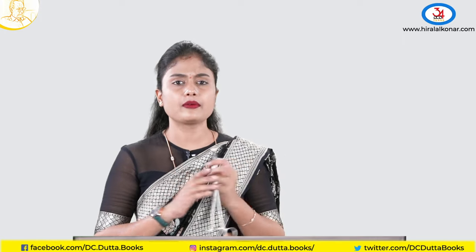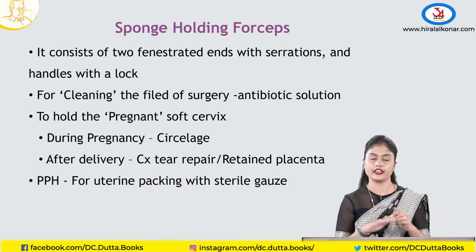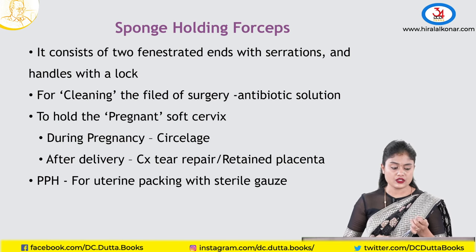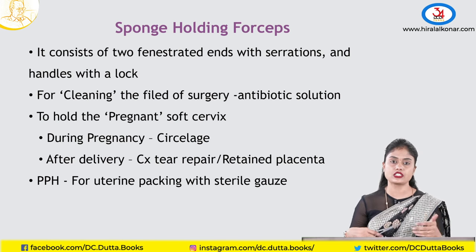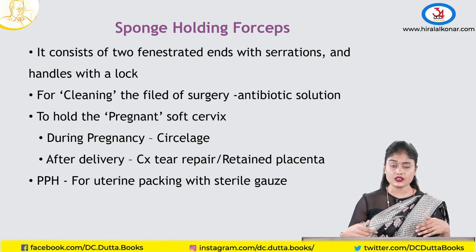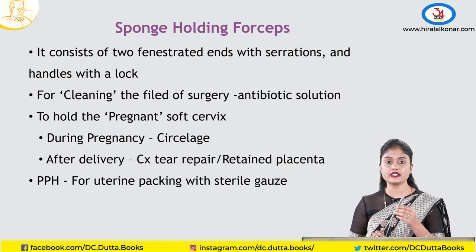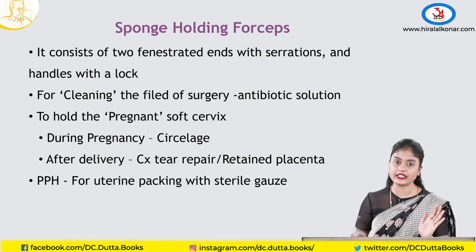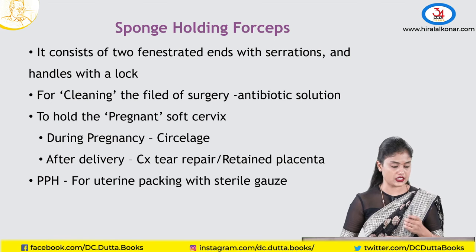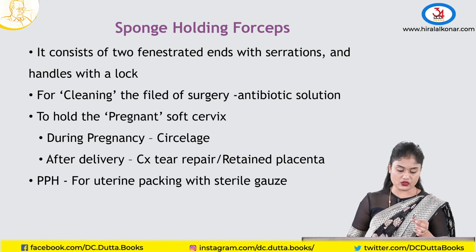Why do we use the sponge holding forceps? Before any procedure, the first thing we do is clean the operative area. In delivery, we clean the perineum and surrounding structures. In abdominal procedures like caesarean or hysterectomy, we clean from mid-thighs to the xiphisternum. This instrument helps us hold a sponge and clean the surgical field with antiseptic solution — be it betadine or spirit.